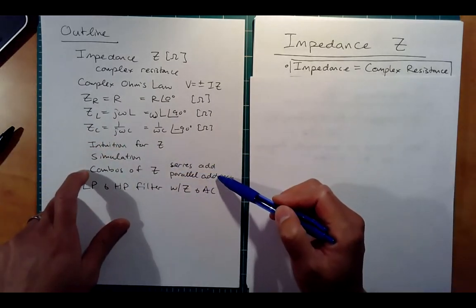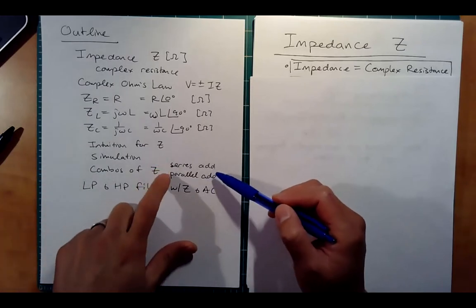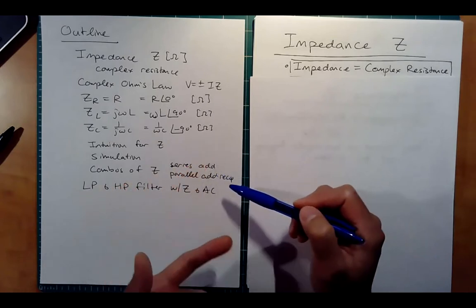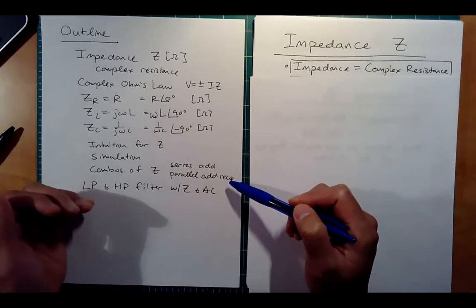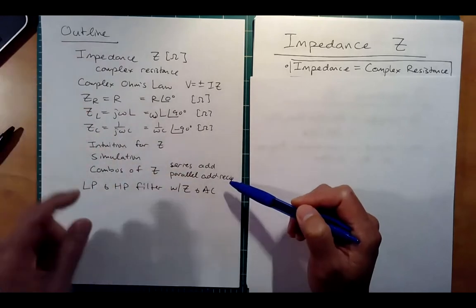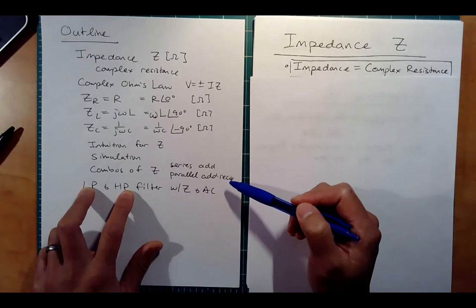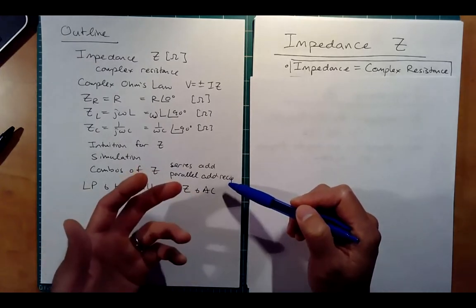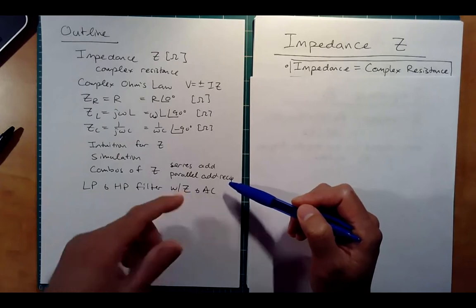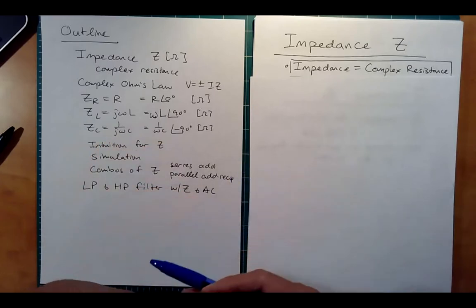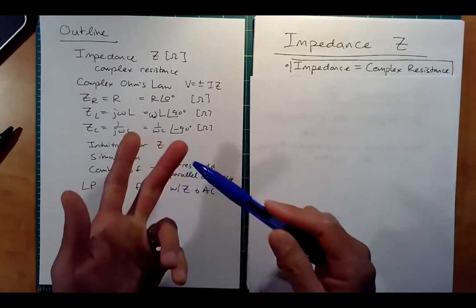We'll review how to combine different combinations of Z, either in series or in parallel. We can just treat them like resistors — add them up in series, and when in parallel, add their reciprocals. The last thing we'll do is take our knowledge here and bring it back to our low-pass and high-pass filters, because they were in an AC world dealing with capacitors, resistors, and inductors. We'll bring in the concept of Z and see how we can get those Bode plots, and show you where those plots come from for both the gain and the phase.